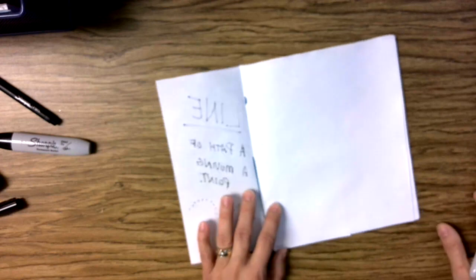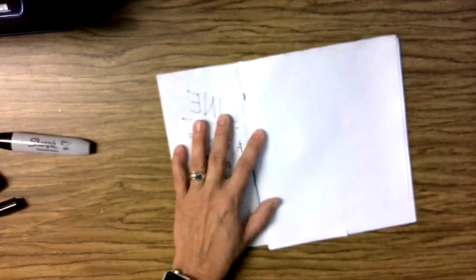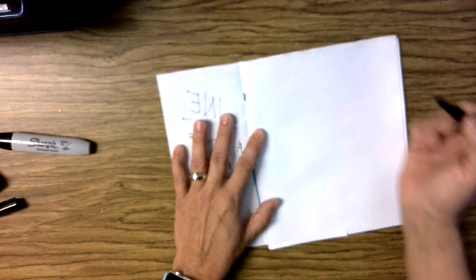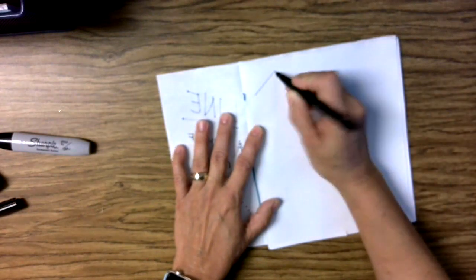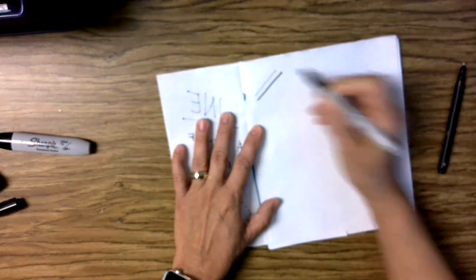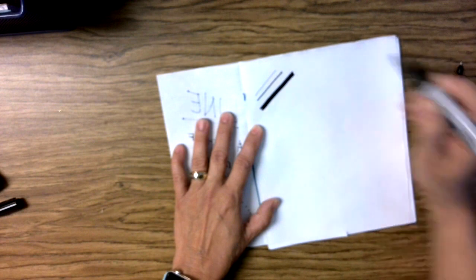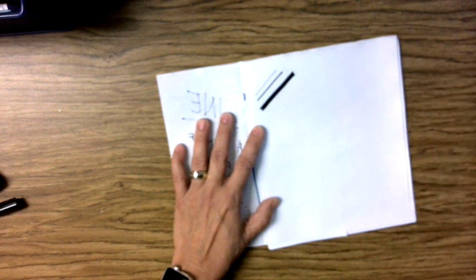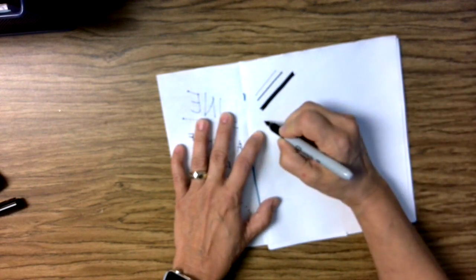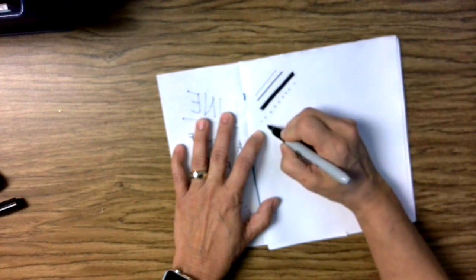Let's turn a page and let's think about some different types of line. Name a few. A thin line, a medium line, a thicker line. We already did a dotted line. A dash line.